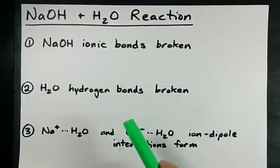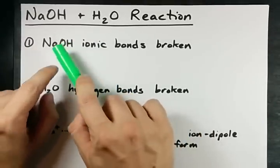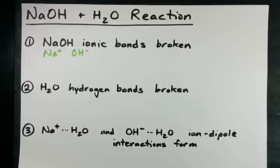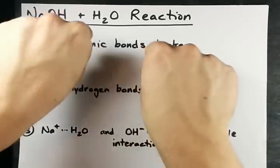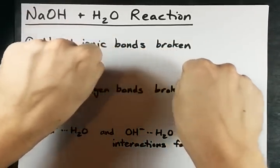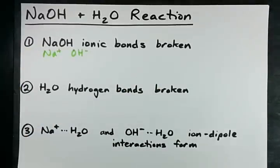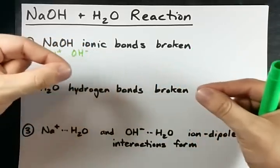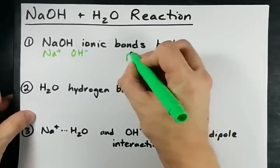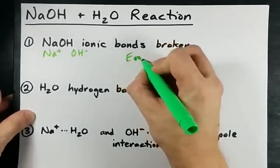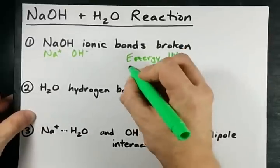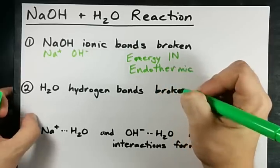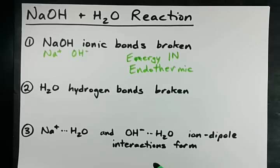Anyways, so the first thing that happens that I want you to consider is that you're breaking apart Na+ ions and OH- ions. Plus, minus, attracted to each other. To pull those apart from each other is going to require energy. It's like pulling apart two magnets that are stuck together. You've got to physically pull them apart. You need to put energy in, i.e. it's an endothermic process, if you're familiar with that word, to break these two ions apart.